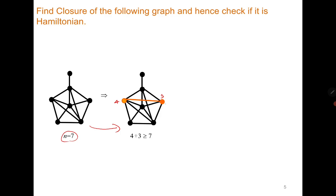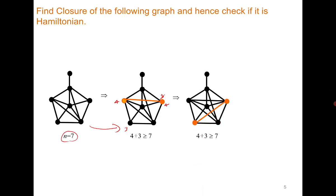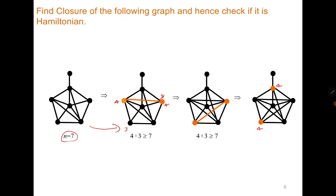Again, you can see that now one vertex has degree 4 instead of 3, and the other has degree 3. They are non-adjacent, so you add the edge and update the graph. This is also a closure step — you look for non-adjacent vertices again. Here the degree is 4 and degree is 4, and they are non-adjacent, so you make them adjacent. Finally, there exist no such vertices whose degree sum is greater than or equal to 7 and who are non-adjacent.